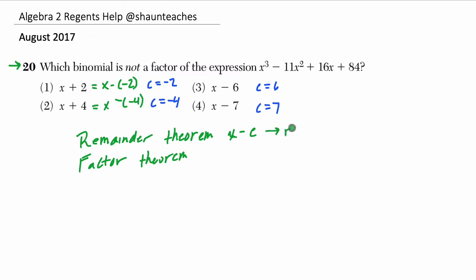So the remainder theorem says that if you're dividing by x minus c, then the remainder equals p of c. In this case, this is our dividend, p of x, and we basically plug in c for x, and that gives you our remainder.